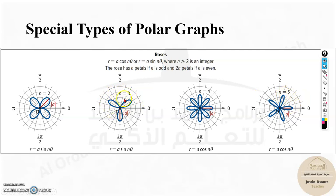This is 1, 2, 3; 1, 2, 3, 4, 5. When the rose has n, if n is odd and n is even, there are two different cases. When it's odd, it's just the same. But when it's even, look over here. Instead of 4, we have 2 times it, that's 8: 1, 2, 3, 4, 5, 6, 7, 8. If it's 2, we have 4. So this is the relation over here.